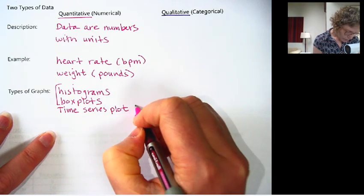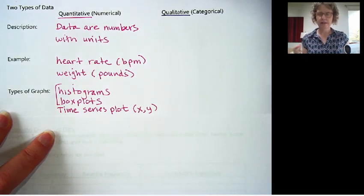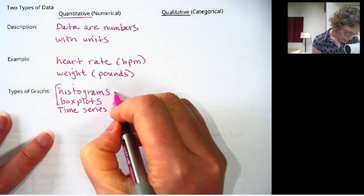Now this only works if you have XY data. You need an X coordinate and a Y coordinate, and the X coordinate would be the time. So here you have two variables. These are both one variable.